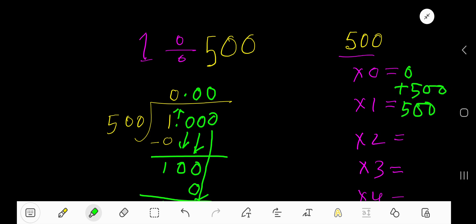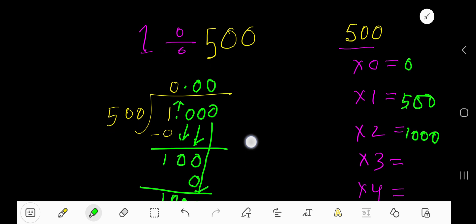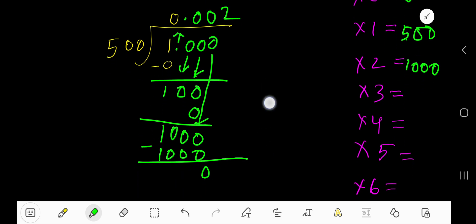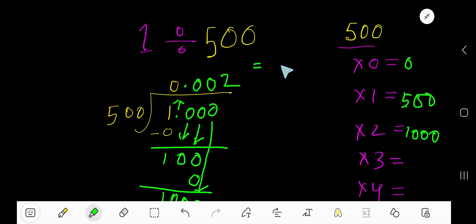500 times 2 is 1000. So 500 goes into 1000 two times. 2 times 500 is 1000. If you subtract, you get 0. So our result is 0.002.